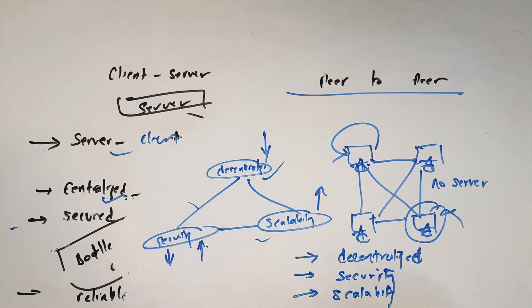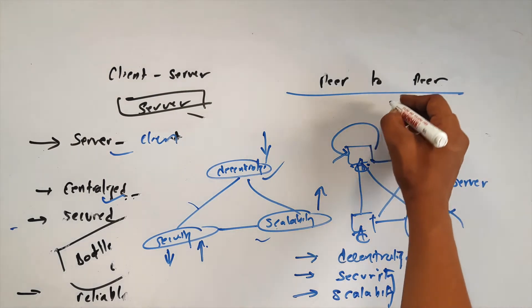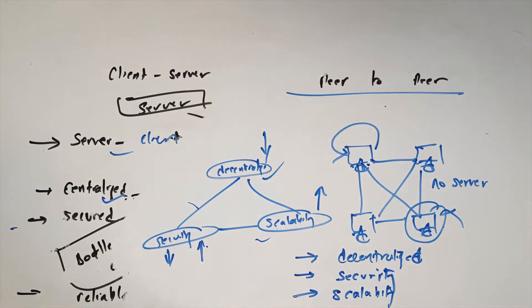There is cryptocurrency. Cryptocurrency is a peer-to-peer network example. Cryptocurrency is Bitcoin.